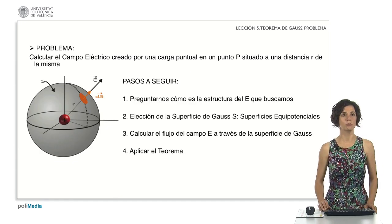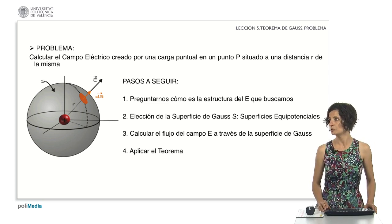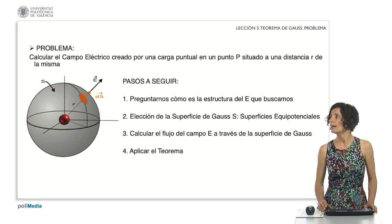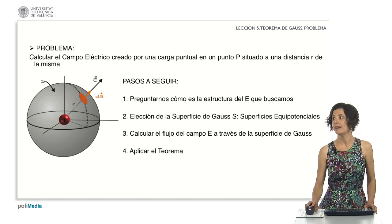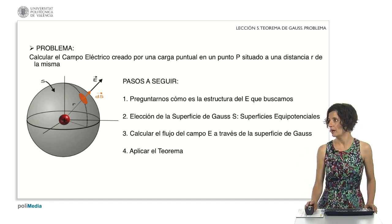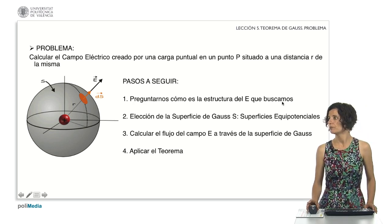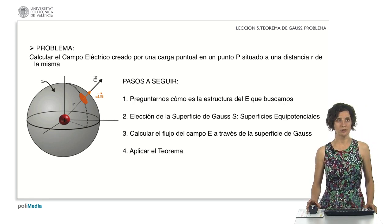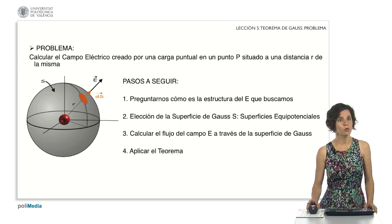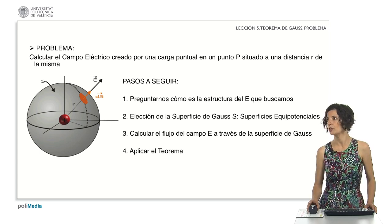Finally, we are going to do a problem applying Gauss's law. We are going to calculate a well-known field — the one created by a positive point charge — and we will calculate the field at a point P at a distance r from it. To do this, we will follow the steps shown on the screen: first, ask how the field structure looks; then choose a Gaussian surface, which has to be an equipotential surface; then calculate the electric field flux through that surface; and finally apply the law to solve for the modulus of the electric field.